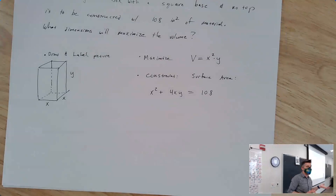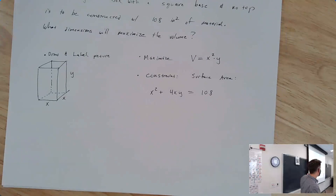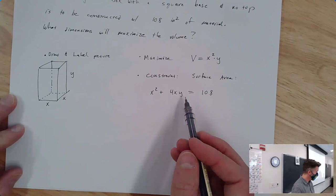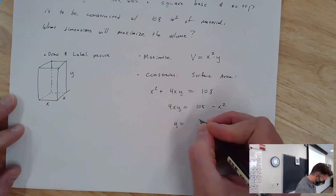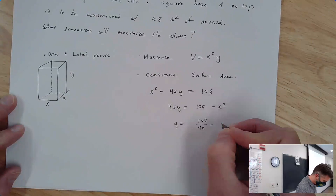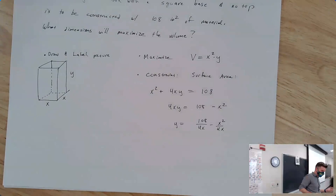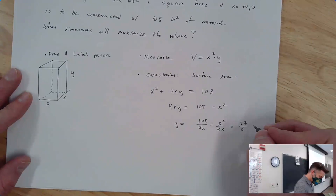We're going to use that constraint to isolate a variable. It's much easier to solve for y than for x, since there's only one y and multiple x's. So 4xy equals 108 minus x squared, giving us y equals 108 over 4x minus x squared over 4x. You can simplify this as 27 over x minus x over 4.